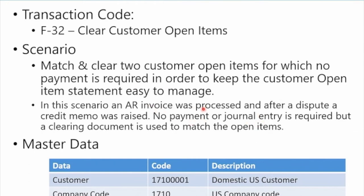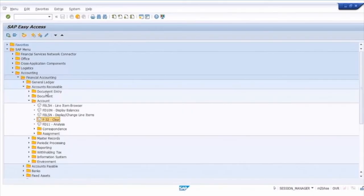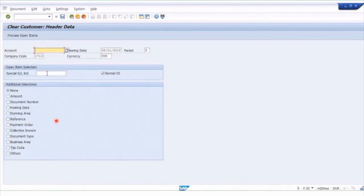In this scenario we have an AR invoice that was processed, but after a dispute a credit memo was raised for the customer. No payment or journal entries are needed, but a clearing document is used to match the original invoice and the credit memo to clear the open items. We're going to use our same customer number and company code 1710. Let's see what that looks like in SAP.